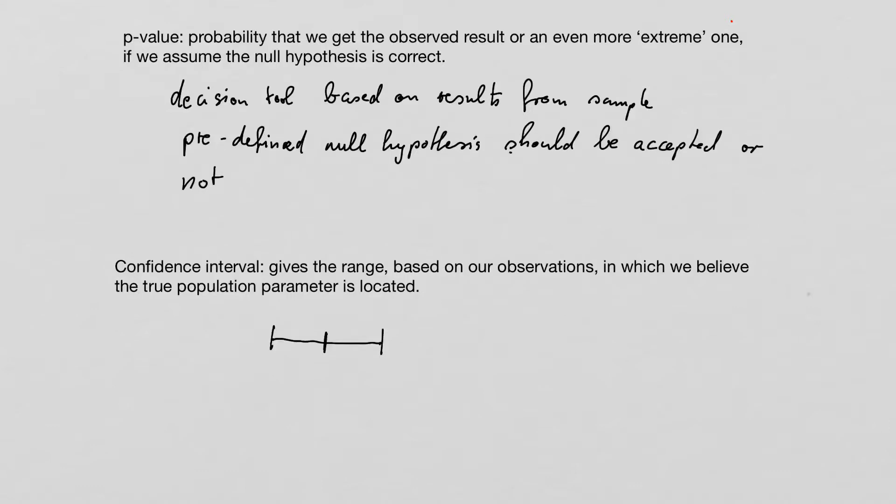So if we are looking for a sample mean, we can calculate a confidence interval here. And we say that we are pretty sure that within this confidence interval, somewhere the true mean of our population is located.